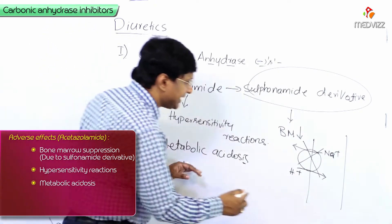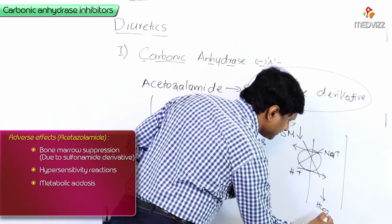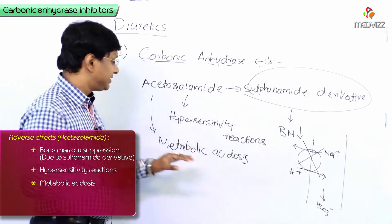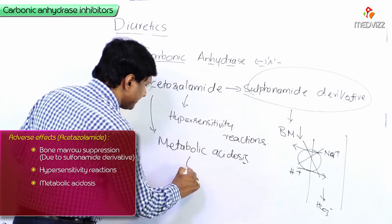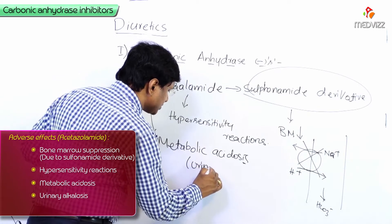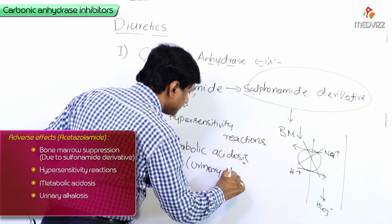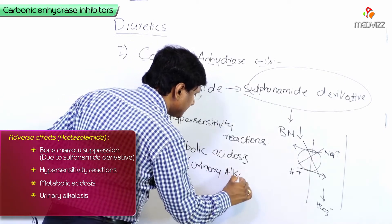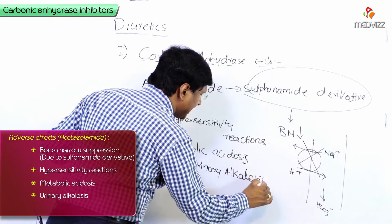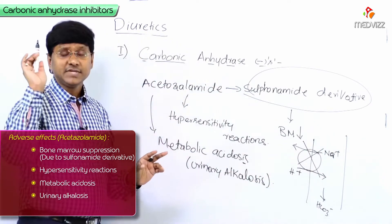In response to the metabolic acidosis, acetazolamide causes excretion of bicarbonate, and thereby the individual will have urinary alkalosis.